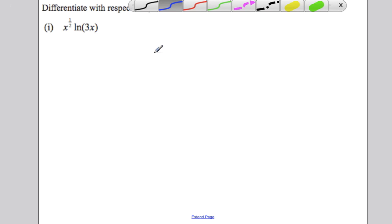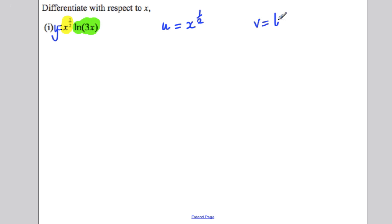Now, always with these, call the function y equals. State your u and your v. You must state it. If you just go ahead and do this, it is not good enough and you will make mistakes. So state that your u is x to the half and that your v is ln of 3x.